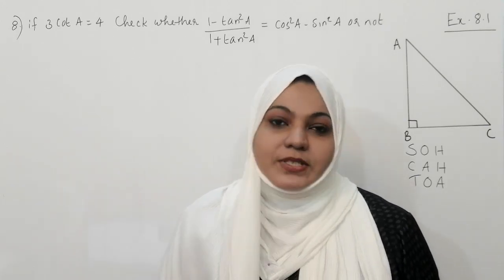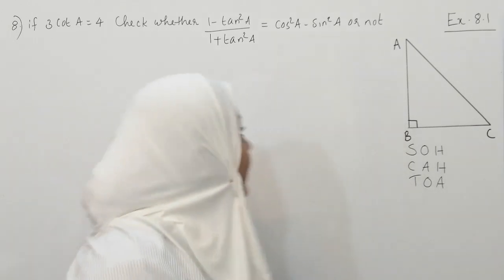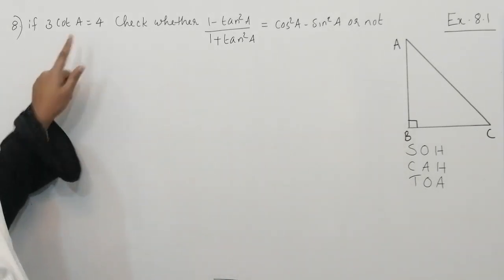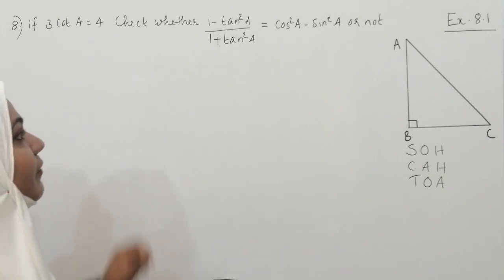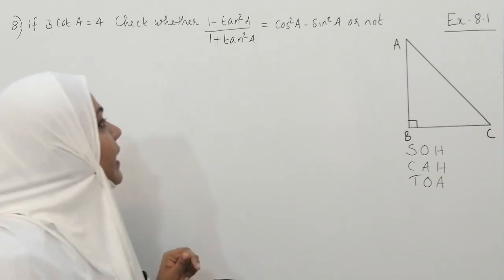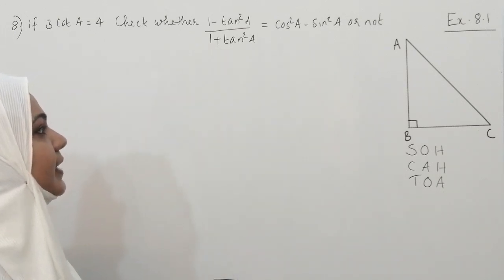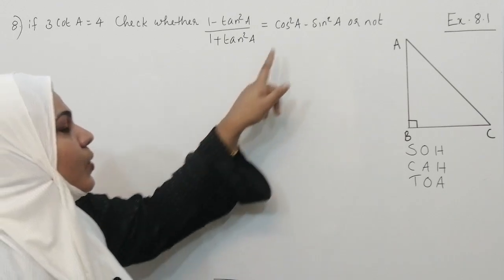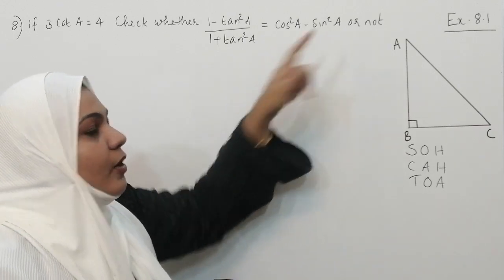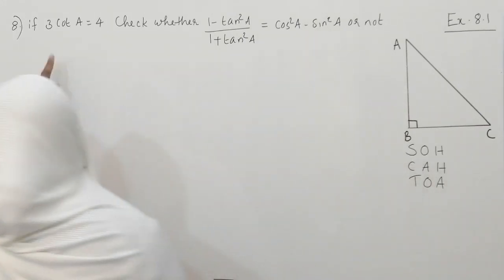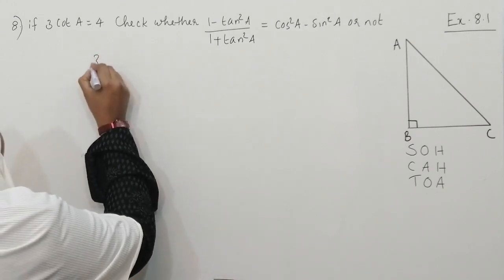Let's start with question number 8. The question is: if 3cotA equals 4, check whether (1 minus tan²A) divided by (1 plus tan²A) is equal to cos²A minus sin²A or not. So here they have given 3cotA is equal to 4.